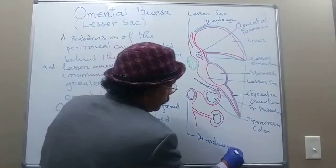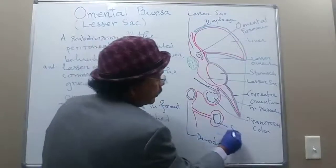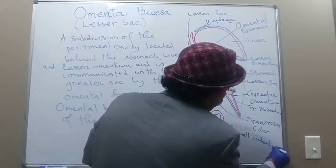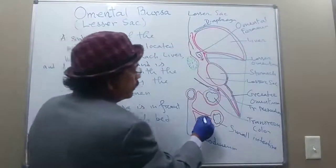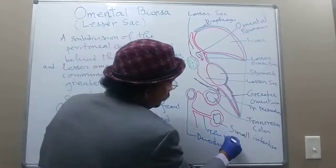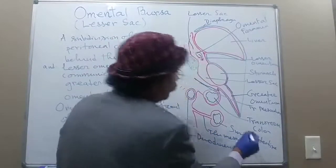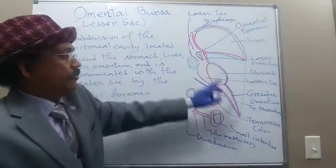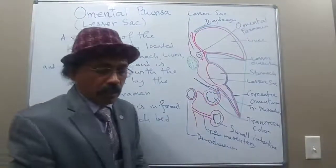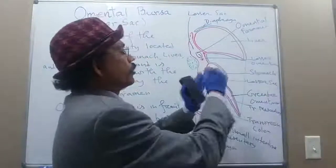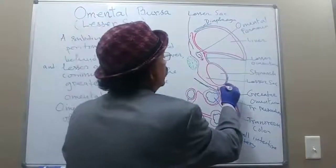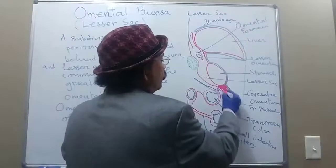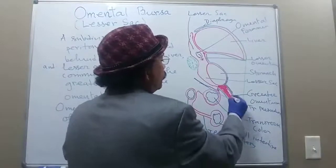This is the duodenum and small intestine with the mesentery. The lesser sac has an upper recess and a lower recess. The lower recess will eventually be compromised because the layers fuse together, so the lower recess will be lost eventually.